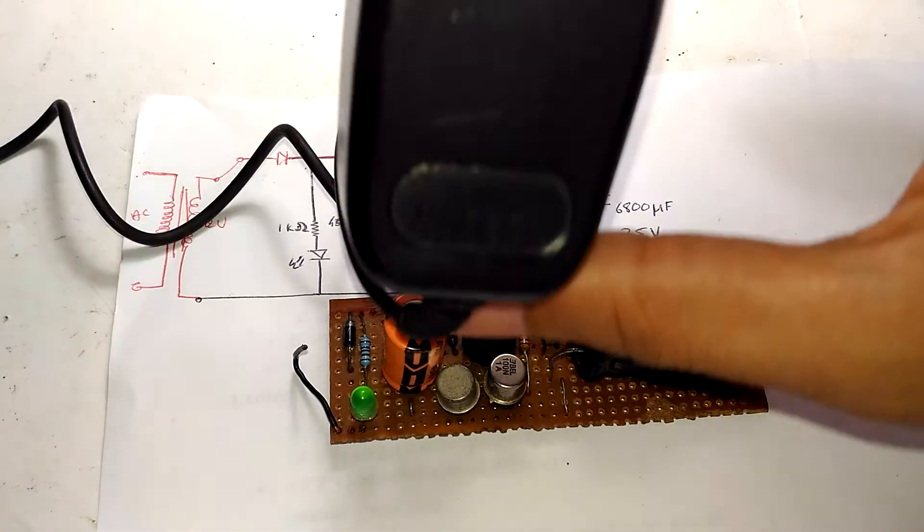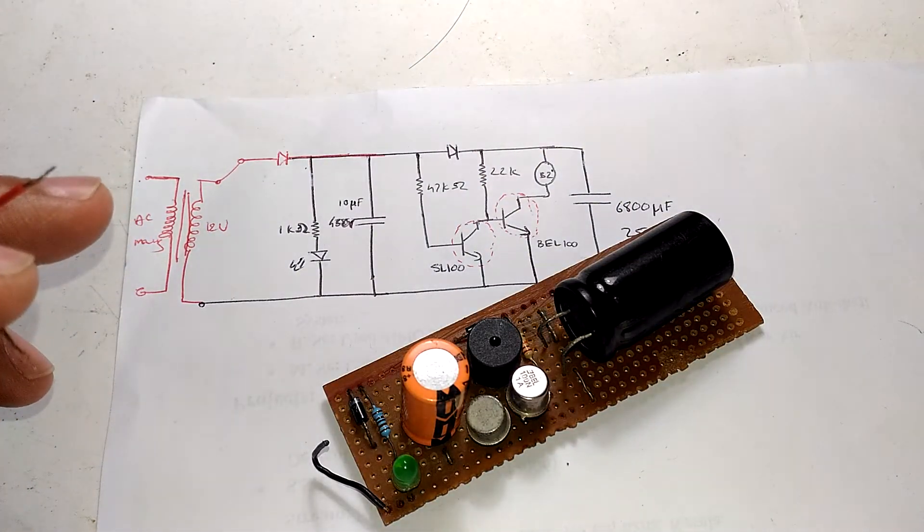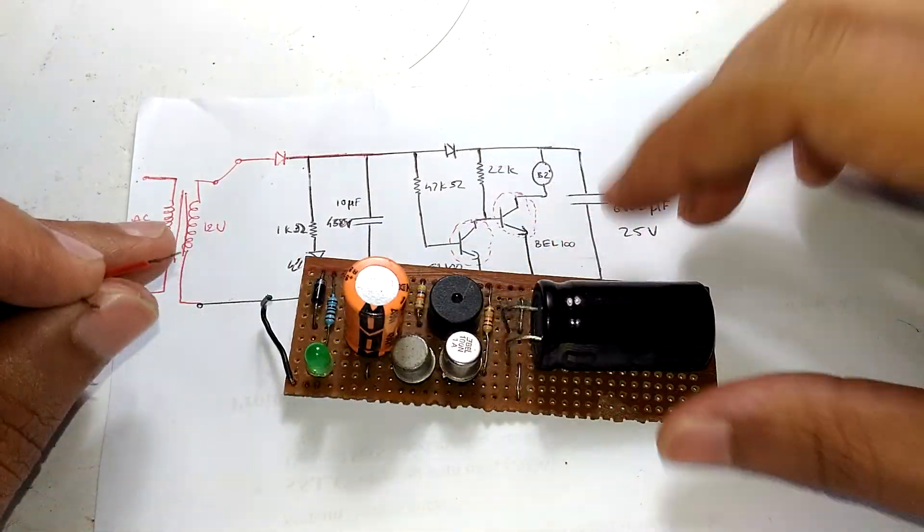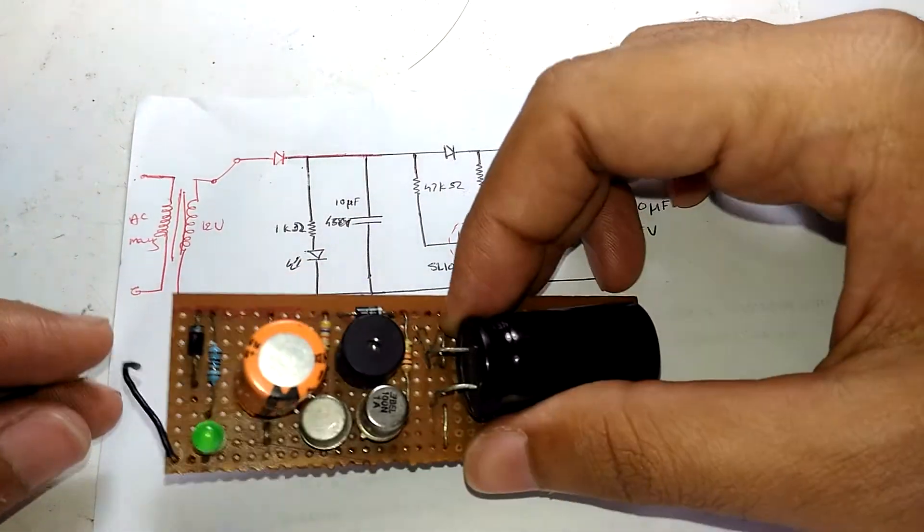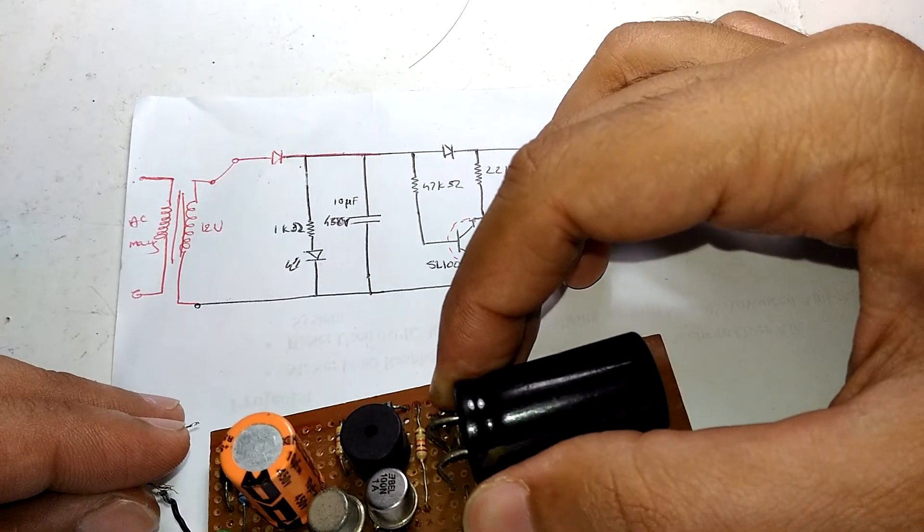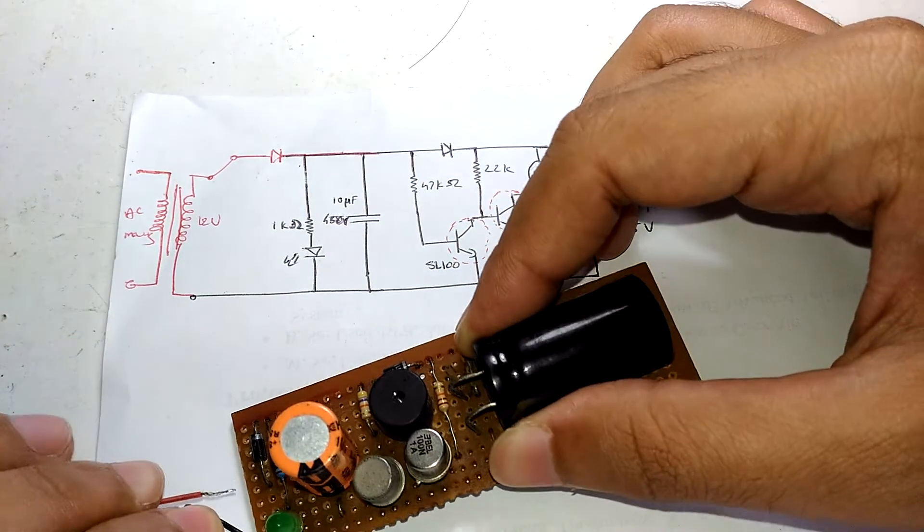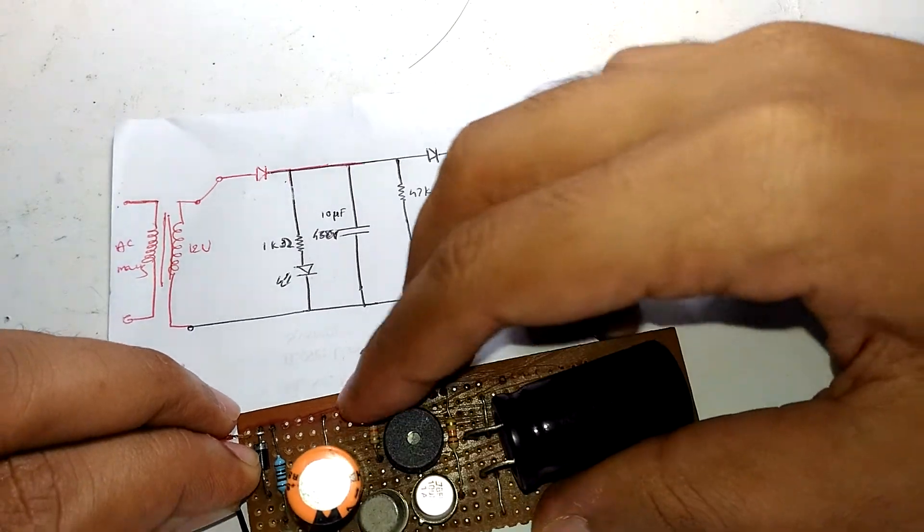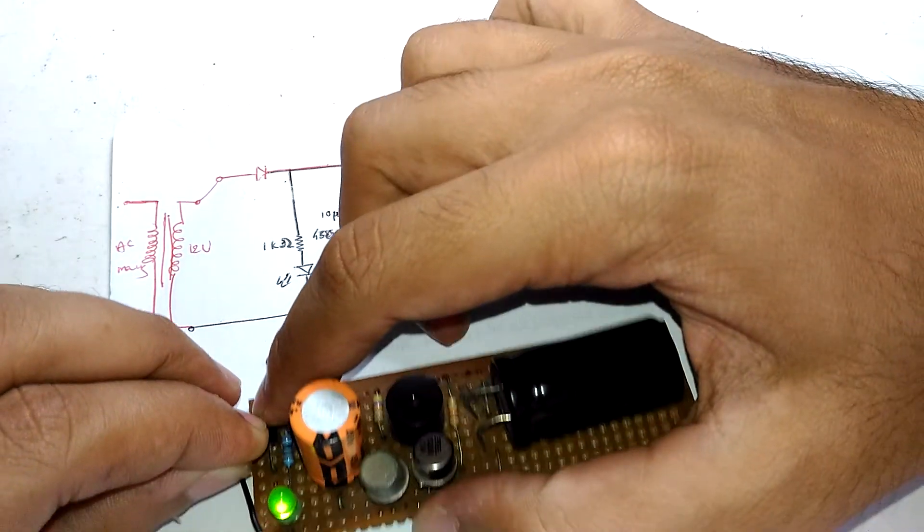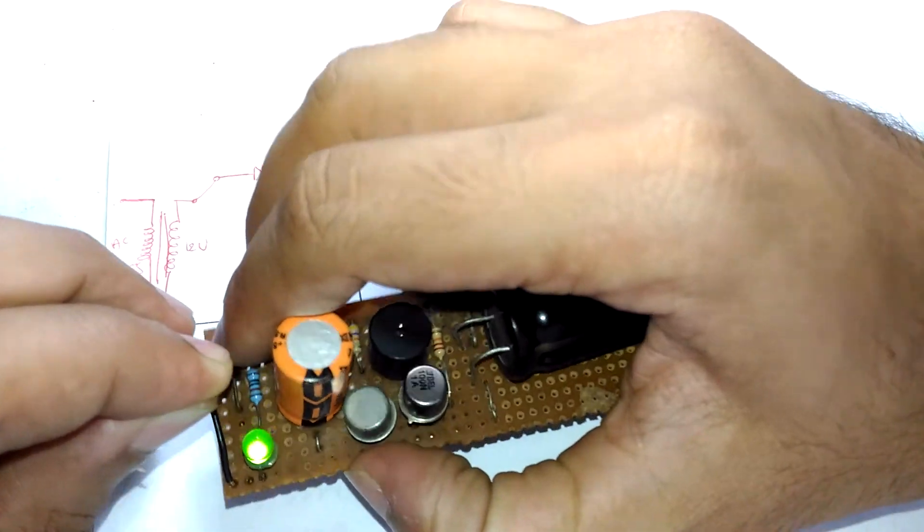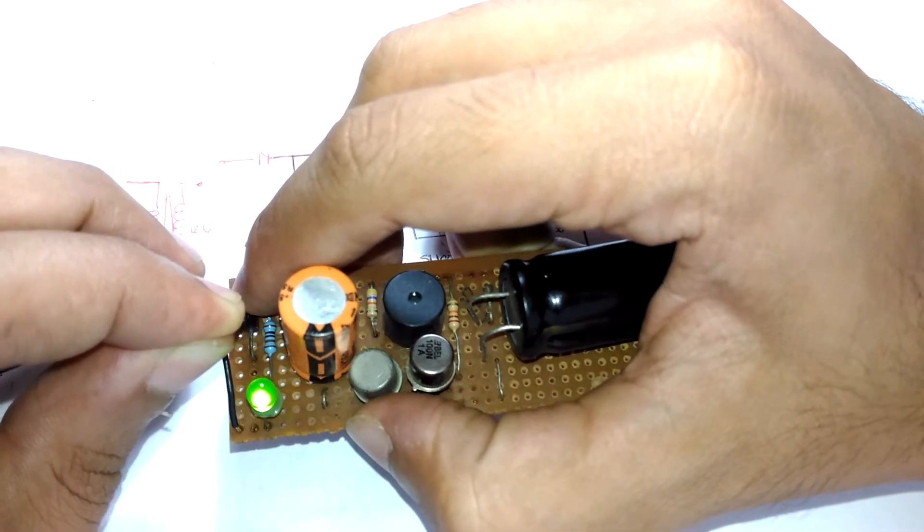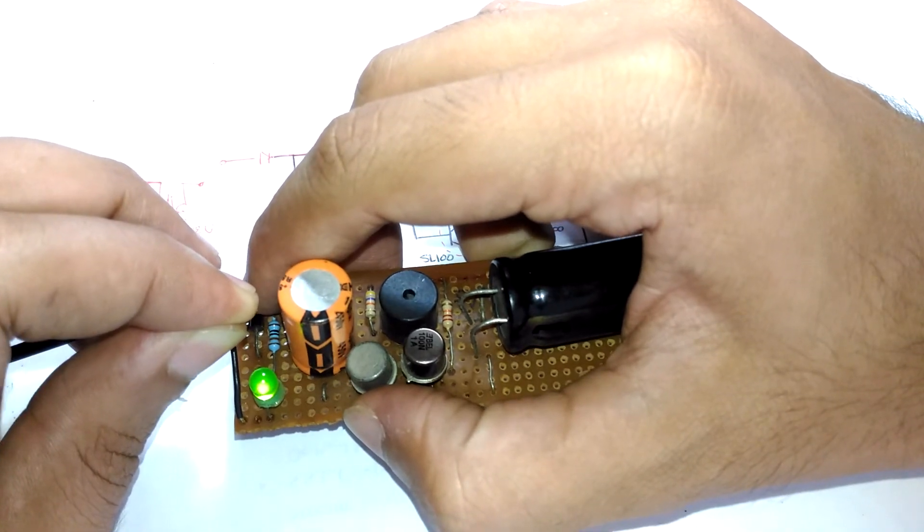I'm using a cell phone charger, 5 volts. Because it's 5 volts the volume will be very low - this thing is designed to work with 12 volts and above. I'm connecting positive to positive, negative to negative, ignoring the diode. You can see the LED is glowing, indicating AC mains presence. Listen - no sound from the buzzer.